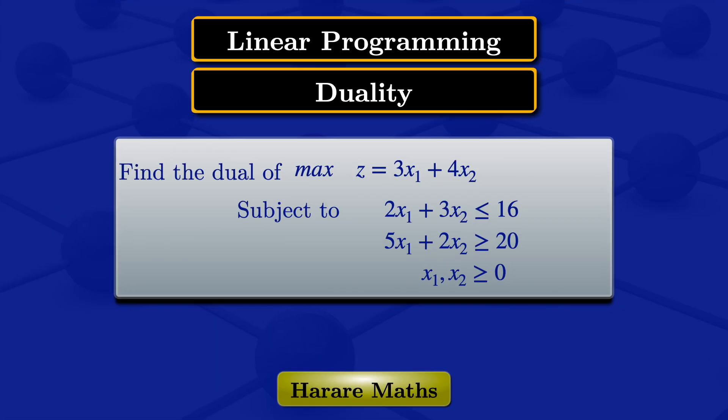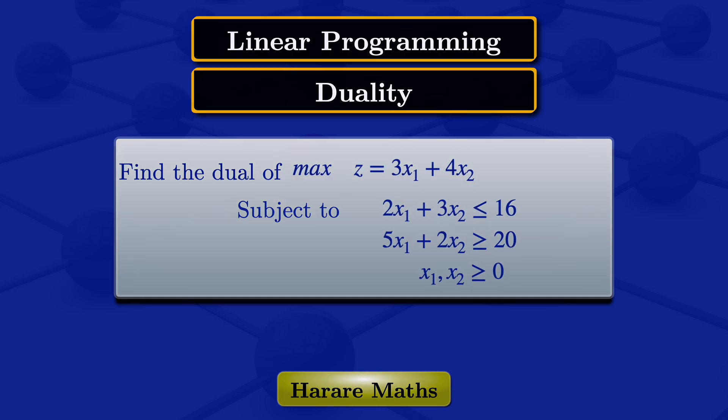In this tutorial, I'm going to find the dual of the linear programming problem: maximize z equals 3x1 plus 4x2, subject to 2x1 plus 3x2 less than or equals to 16, 5x1 plus 2x2 greater than or equals to 20, and x1, x2 greater than or equals to 0.